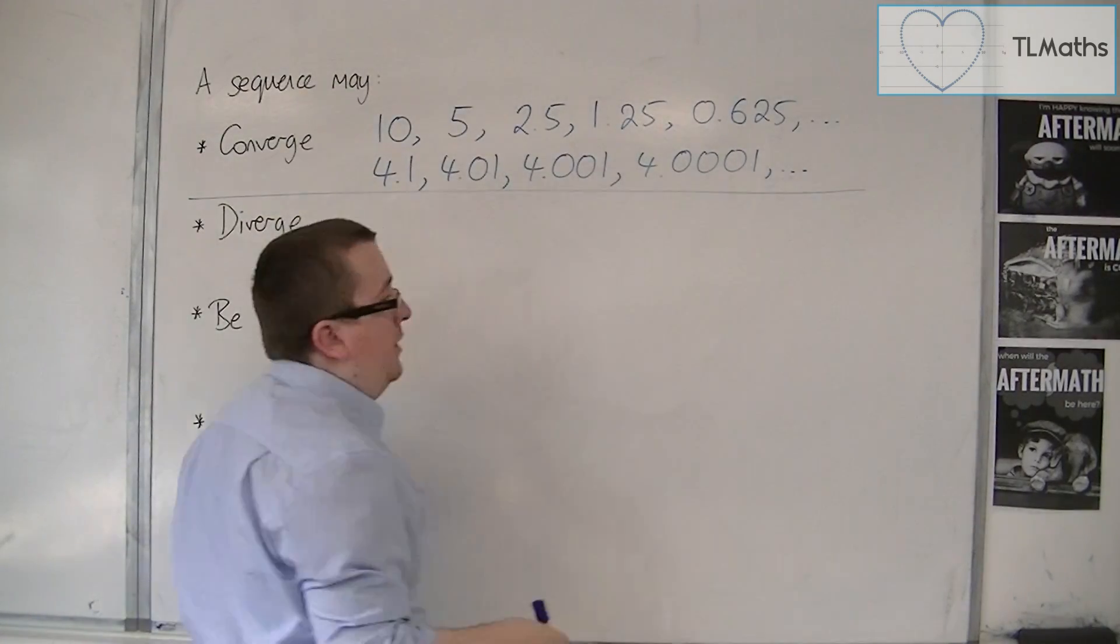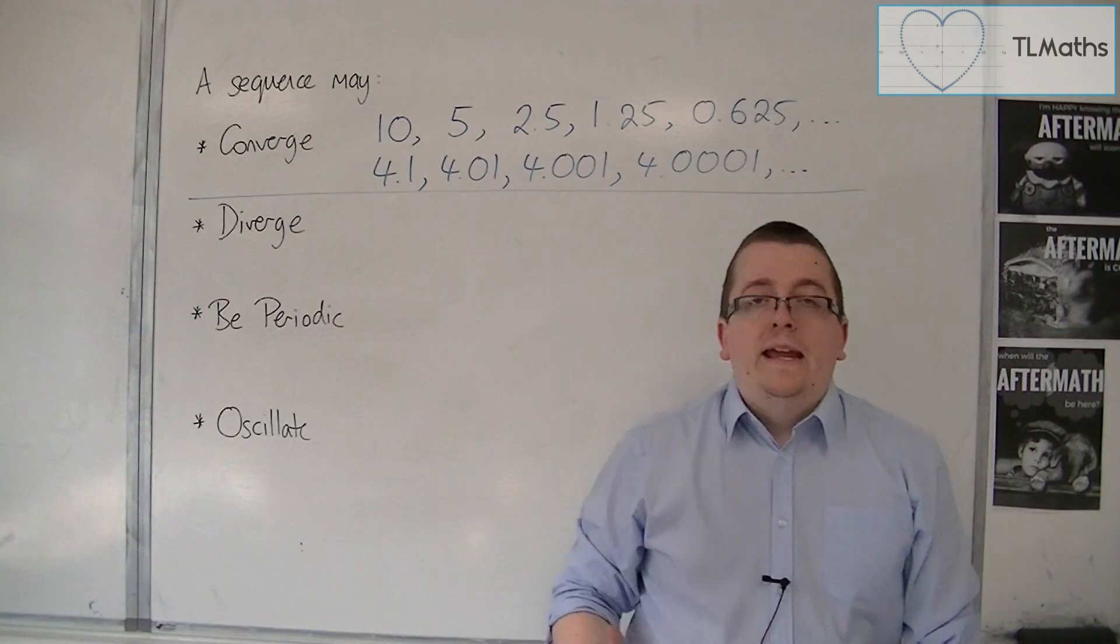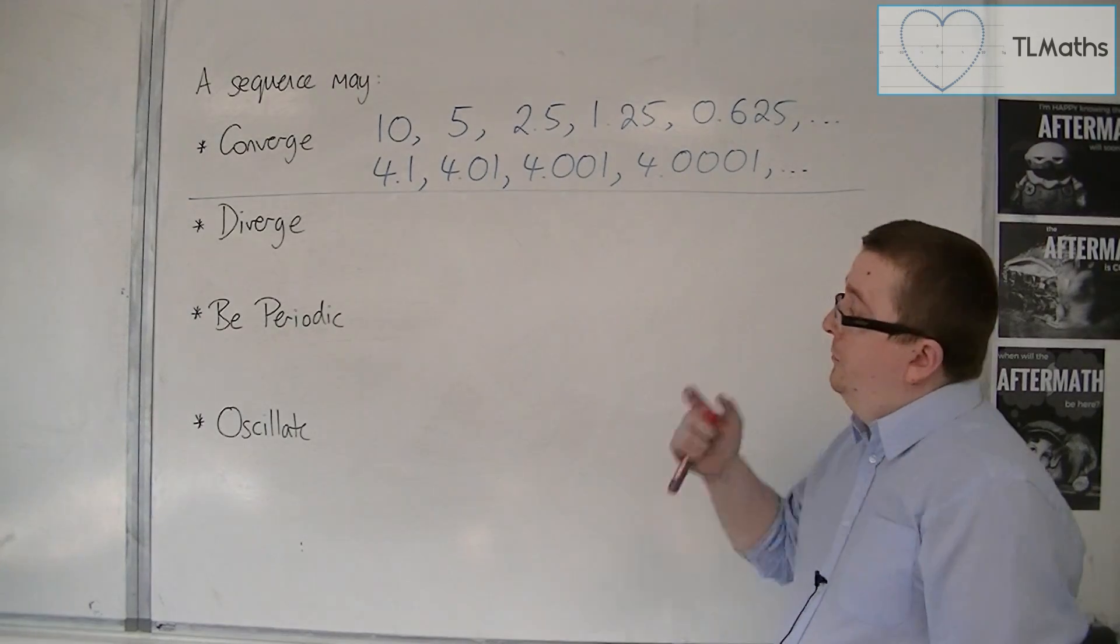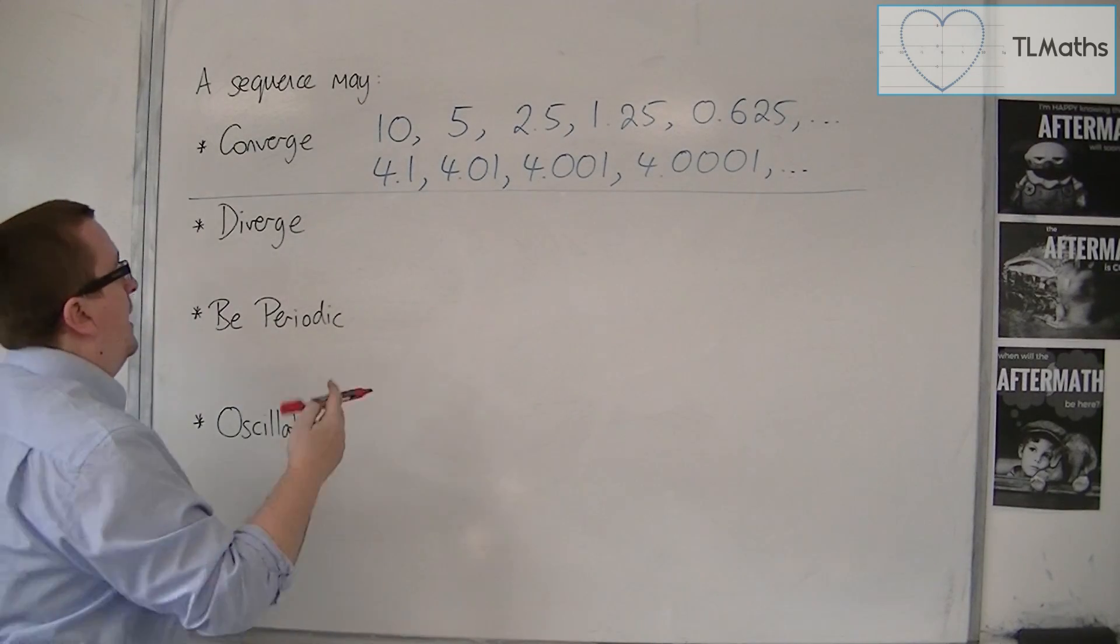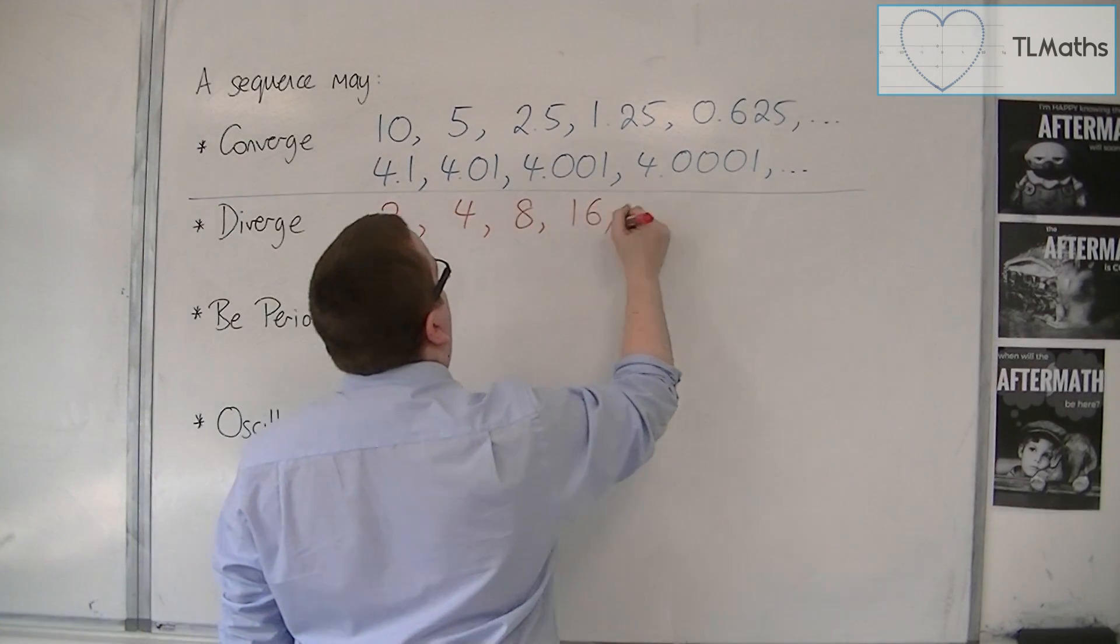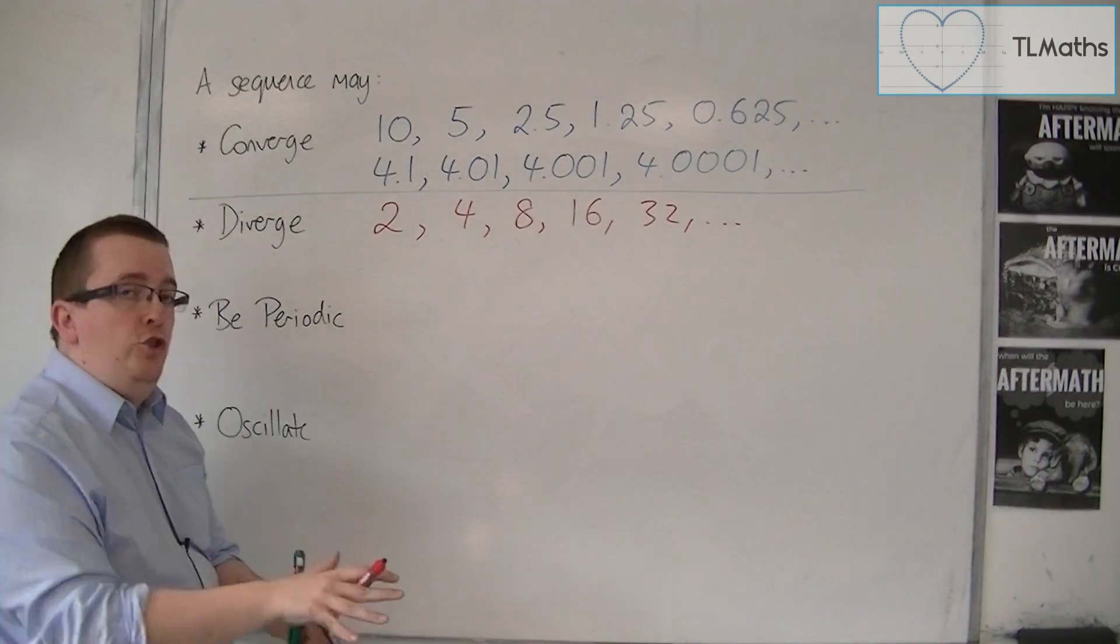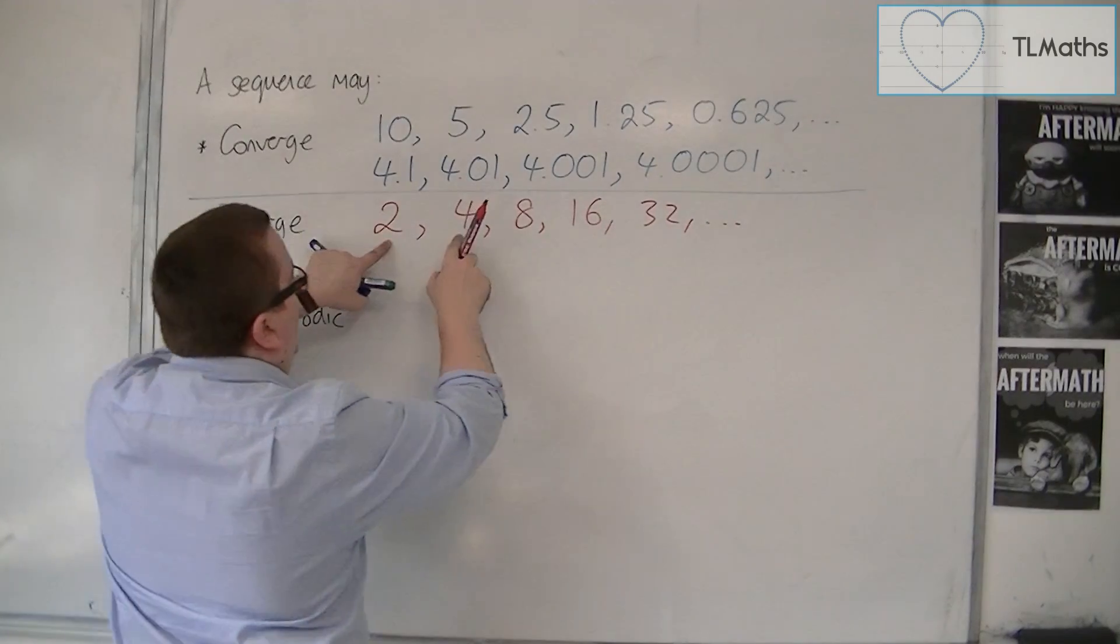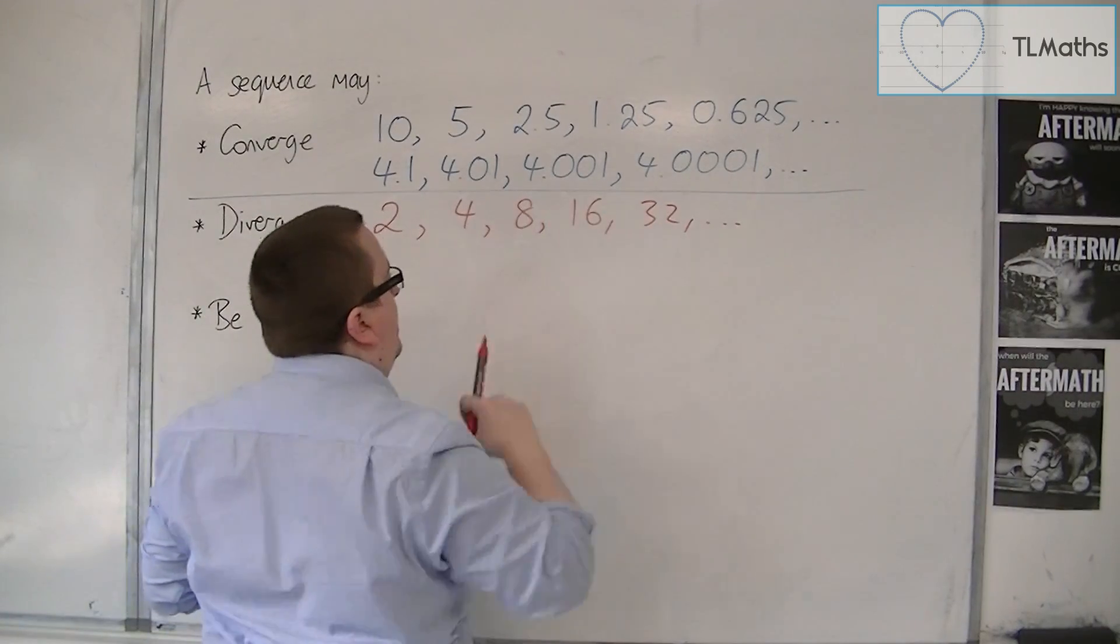Now, a diverging sequence, if you go by the actual definition of one, is a sequence that does not converge. In that way, you could have a sequence that looks like this: 2, 4, 8, 16, 32, and so on. Each time it's doubling, it's not converging towards a specific number. It is diverging. Each gap is larger than the next.